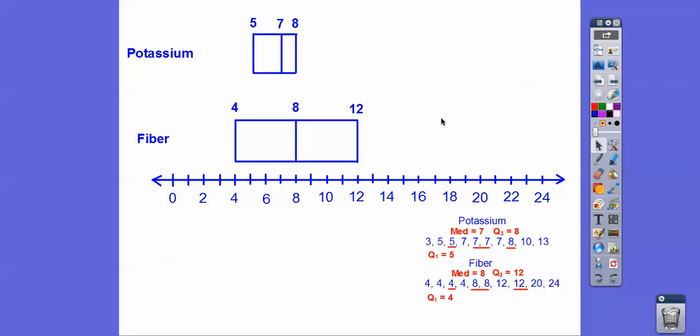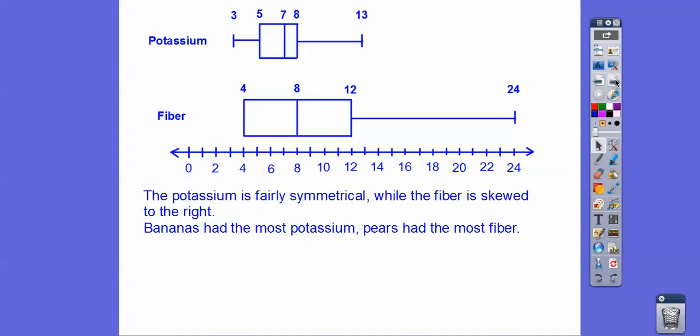I was telling my students in class, this one kind of looks like it's skewed to the left, but we haven't put the whiskers on yet. And this one is totally symmetrical, but again, we haven't put the whiskers on. The whiskers go to the small number and the big number. Well, this small number is the exact same as that quartile, so we don't have a left whisker. But this whisker goes all the way to 24 right there. This one's definitely skewed to the right because of that big whisker. Bananas had the most potassium, and cherries had a lot of potassium. And pears have the most fiber.